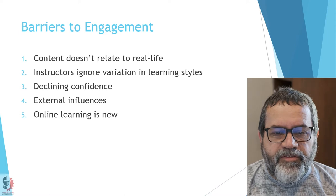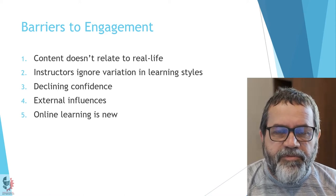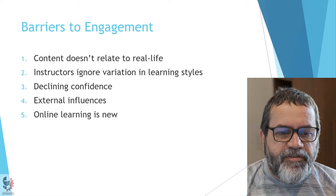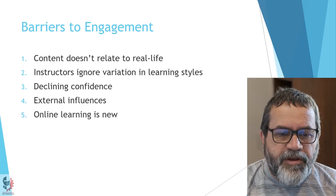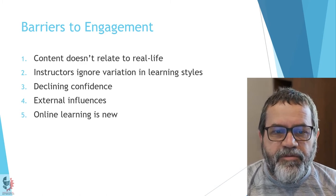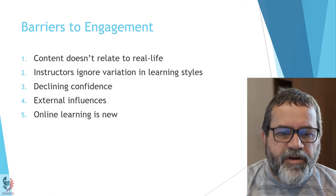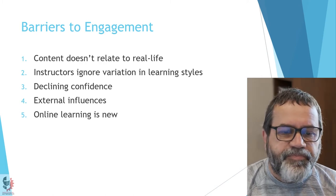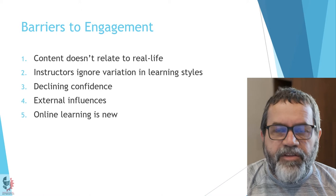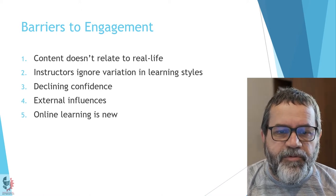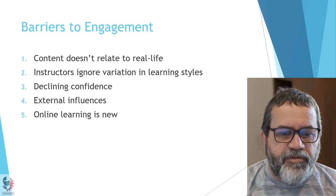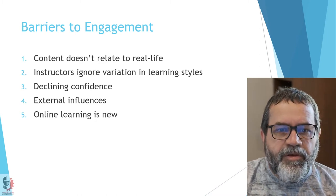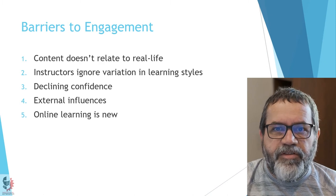Fourth are the external influences. There are many different things affecting people's lives these days, and you really don't know what kind of external influences might be in place, but you have to be aware that they are likely out there and causing some kinds of disruption. And lastly, online learning is new to most people, and with anything new, it takes a while to get into the new system. So those are the barriers to online engagement.